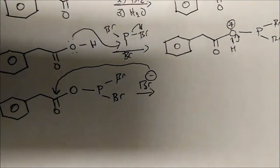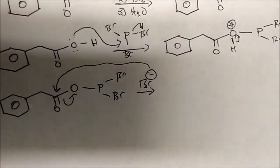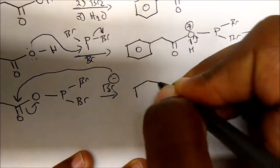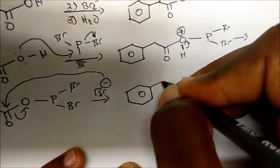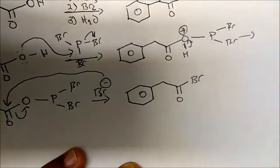Now once it attacks the carbonyl, it will displace this compound here. And so the major product will now look something like this. We have our carbonyl that's now bonded to a bromine.